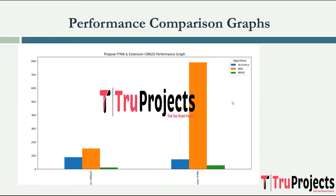Mean Squared Error (MSE) measures the average squared difference between predicted and actual values. In this project, MSE quantifies the overall deviation of the flood prediction values from the observed data, providing insights into the model's general performance. Root Mean Squared Error (RMSE) is the square root of MSE, representing the average magnitude of prediction errors. RMSE serves as a standardized measure of the model's prediction accuracy, indicating how close the predicted flood values are to the actual values.